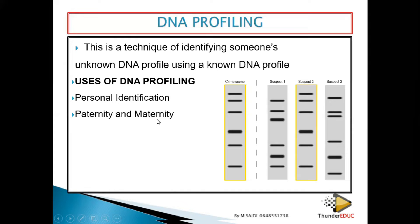Number two: paternity and maternity. Maybe you don't know your mother and two ladies are claiming to be your mother, or similarly for fathers — we can use this technique to identify the actual parents. This is also possible in hospitals where babies may have been swapped at birth. When kids are just born they don't resemble their parents, but as they grow they begin to resemble them — and DNA profiling can still find the parents.